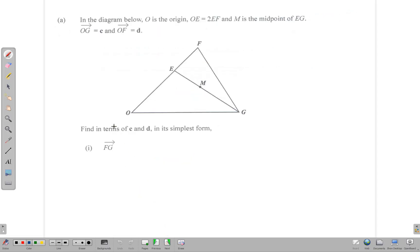We begin with part A, a vectors question, in which it says in the diagram below, O is the origin and OE is equal to 2 times EF. M is the midpoint of EG and OG is equal to C. So we can just go ahead and write that in from now. OG is equal to C and OF is equal to D.